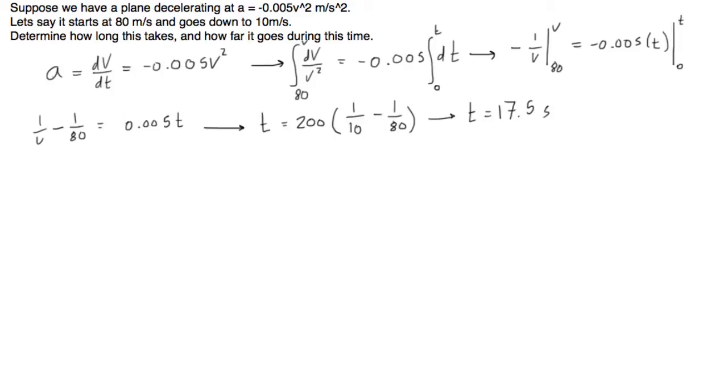Awesome, so that's the first part, that's the answer to the first part of the question. Let's put a box around that. We found the time. Now we want to find how far it's going to go during this time. Let's write acceleration again equals dv/dt.